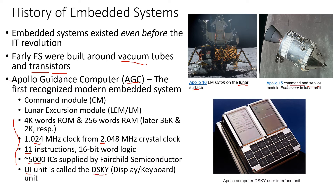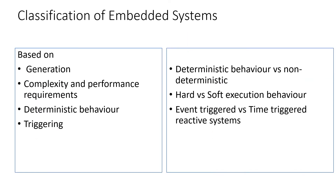The AGC also had a user interface unit called DSKY — Display and Keyboard. Together with this interface, the Apollo Guidance Computer looked like a large calculator with a keypad and display. Despite its simplicity, it was used to travel to the moon and back. The initial version of the AGC came around 1963, and the first lunar mission where man landed on the moon was in 1969.